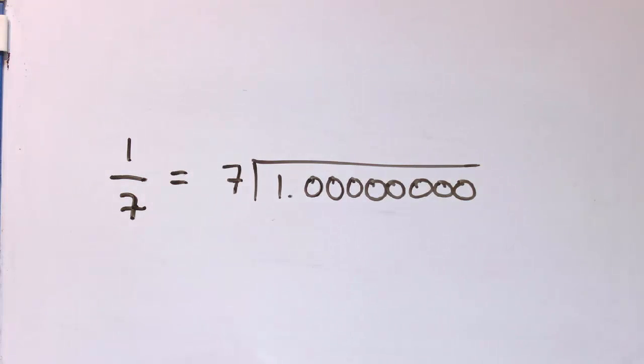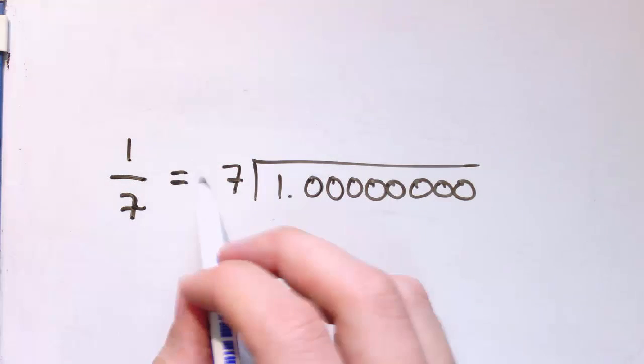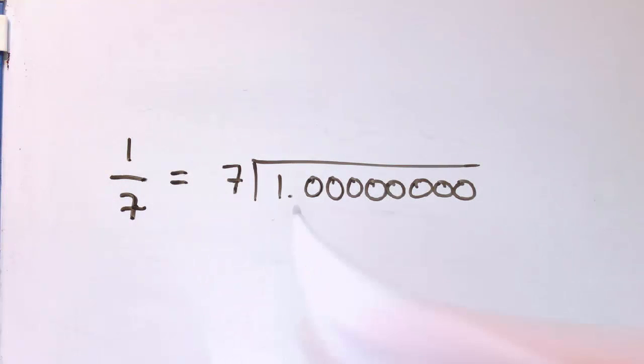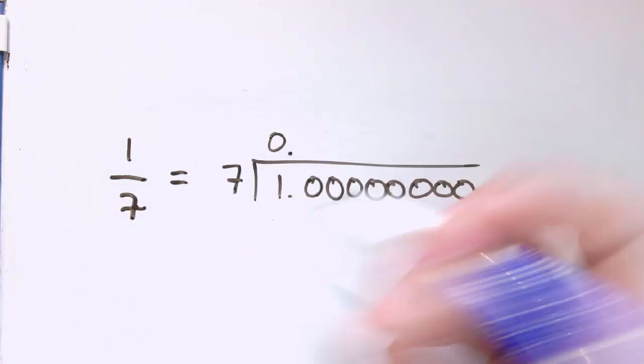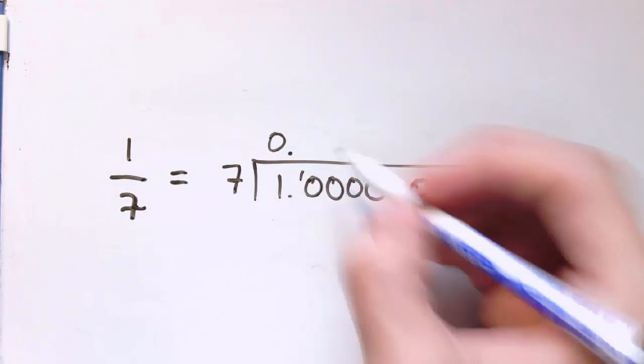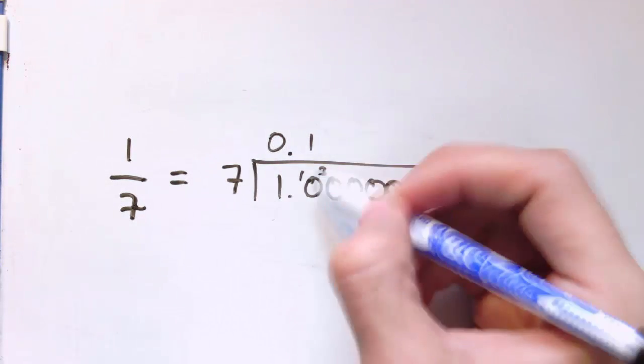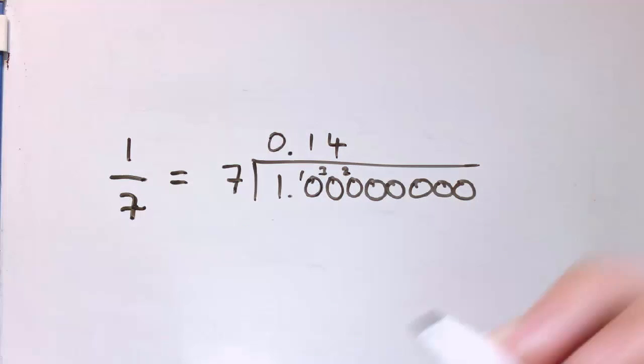Here's another one, 1/7, quite an awkward number. We'll do it the same way. 7 into 1 go no times, and then into 10. Well, we've got 1, so that goes once with 3 left over. 7 into 30, that's 4 times with 2 left over.